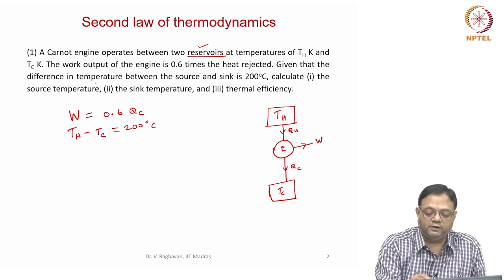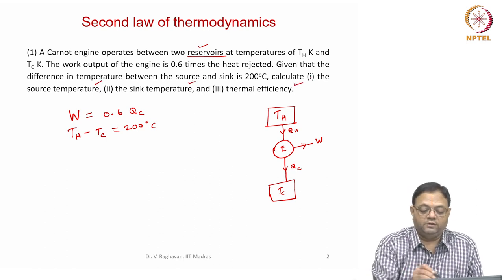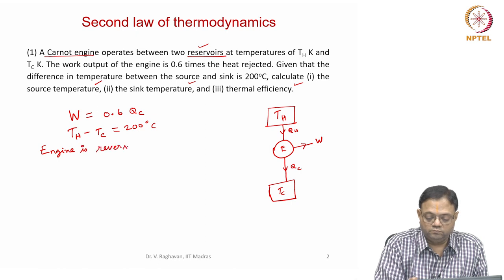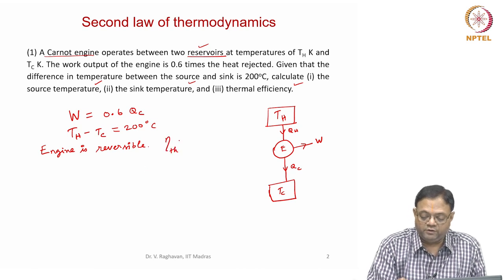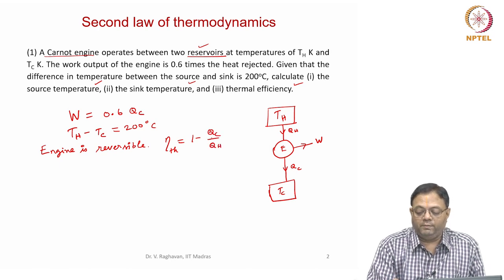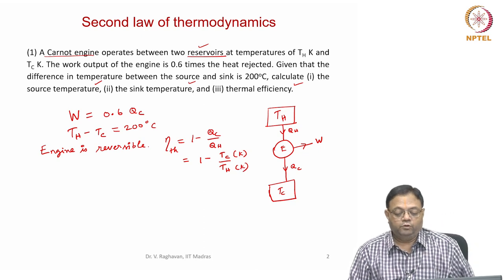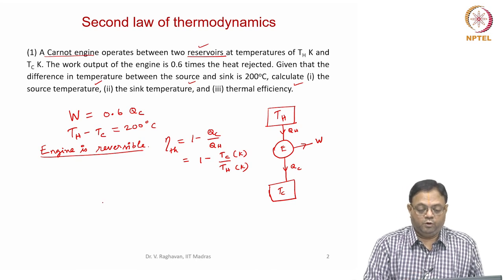Calculate the source temperature TH, sink temperature TC, and the thermal efficiency. This is a Carnot engine, so the engine is reversible. This means the thermal efficiency can be written as 1 minus QC/QH, which equals 1 minus TC/TH, where both TC and TH must be in Kelvin. This holds because the engine is reversible.